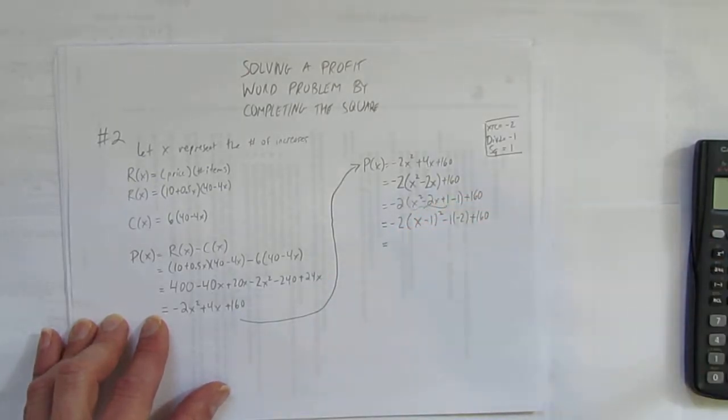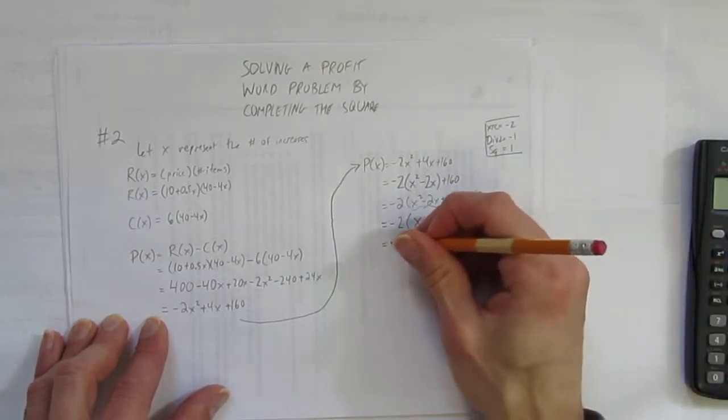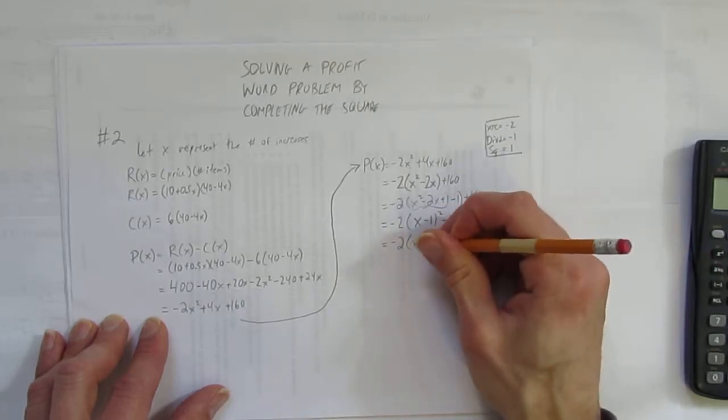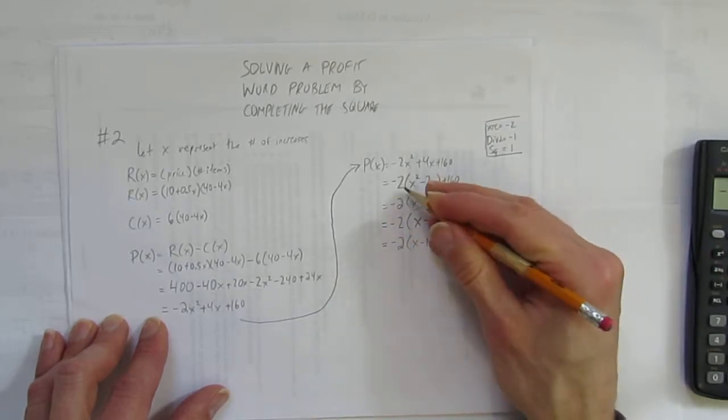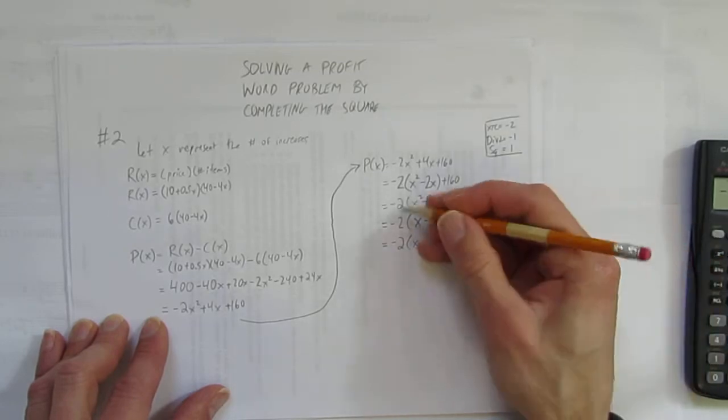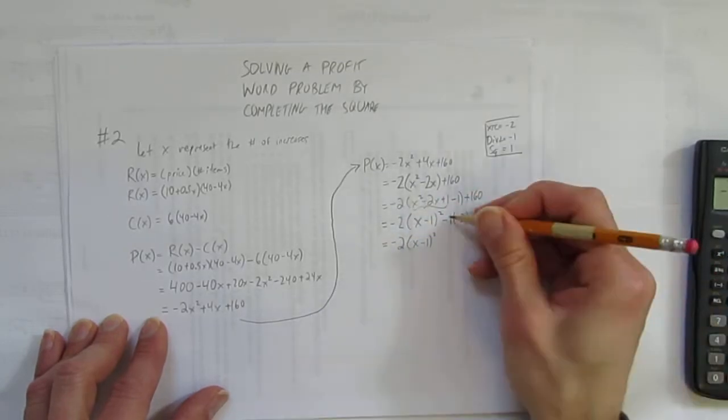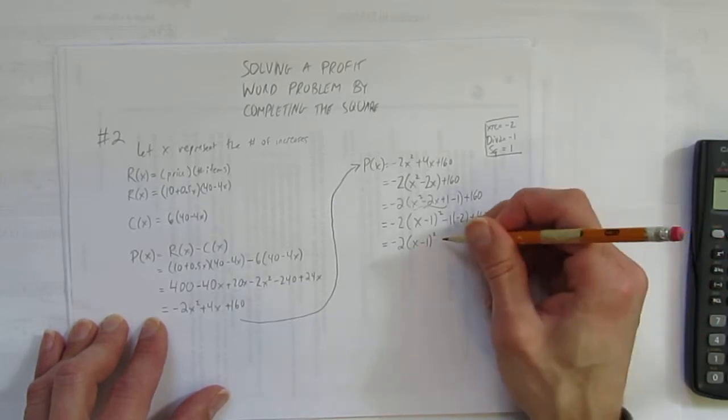And now complete the square. These 3 form a perfect square with whatever the div 2 is. This negative 1 pops out of the brackets. When you do that, it has to get times by this coefficient. Plus 160 still there. We're almost done. Remember, we're completing the square so we can see the vertex, so we can see the maximum. So I have negative 2 x minus 1 squared. Here I have negative 1 times negative 2. That's positive 2. Plus 160 gives 162.